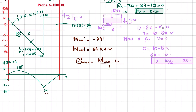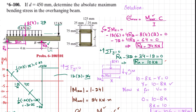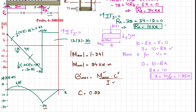Since maximum bending stress equals maximum bending moment times c divided by I, we now calculate c and I. From the cross-section, the neutral axis is at mid-depth, so c equals d divided by 2. With d equals 450 millimeters, c equals 225 millimeters, or 0.225 meters.